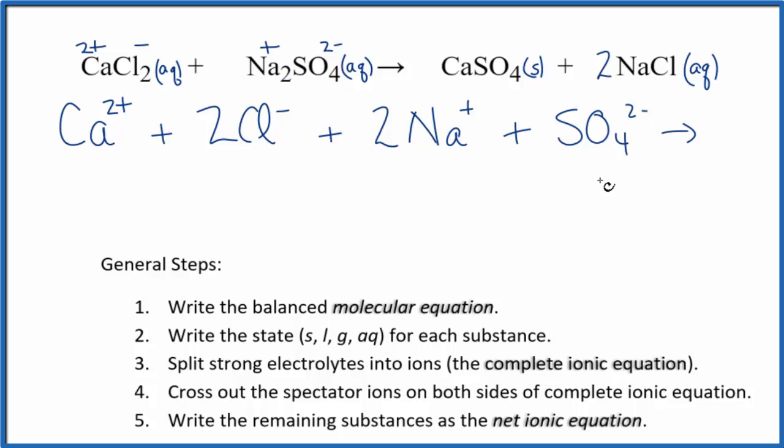So these are our reactants in the complete ionic equation. For the products, we don't split solids apart in net ionic equations, so we just have CaSO4. We keep it together. It's a solid, it's together in the test tube. And then we have 2 sodium ions, and that 2 goes to everything here, so we also have the 2 chloride ions, just like the reactants.